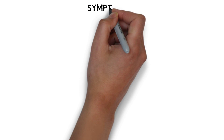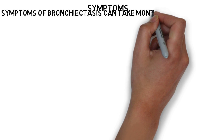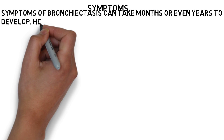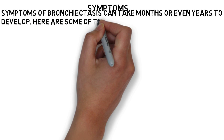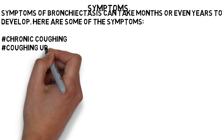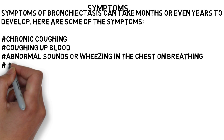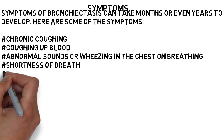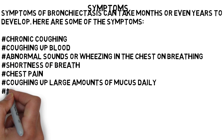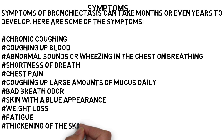Symptoms of bronchiectasis can take months or even years to develop. These include chronic coughing, coughing of blood, abnormal sounds or wheezing in the chest on breathing, shortness of breath, chest pain, coughing of large amounts of mucus daily, bad breath odor, skin with a blue appearance, weight loss, fatigue, and thickening of the skin under the nails and toes.